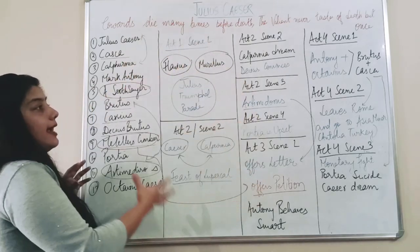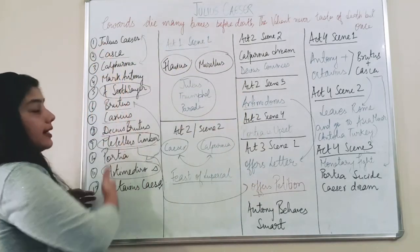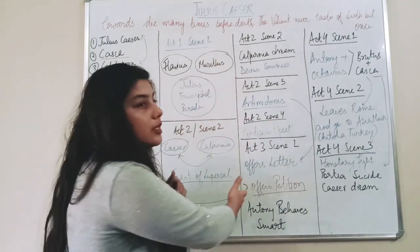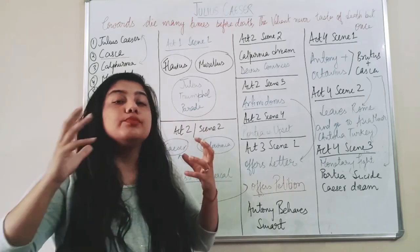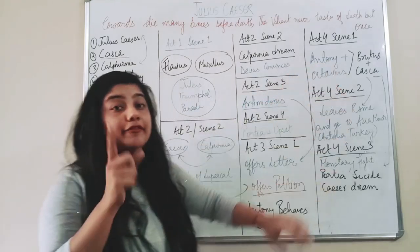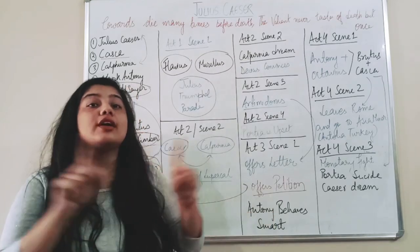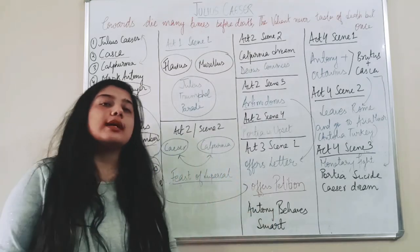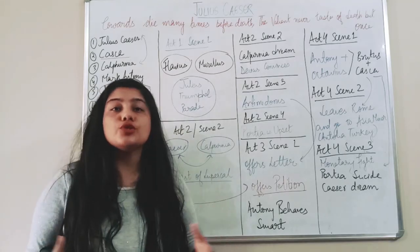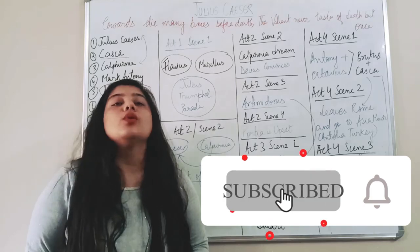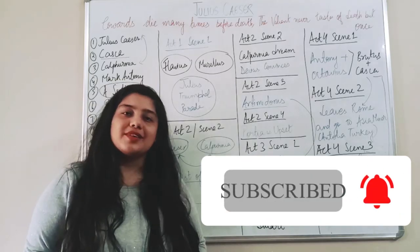So now this was Julius Caesar that I explained in short. I told you about the characters, I told you about the scene, how the warnings were given, how the conspiracy was planned and what a beautiful revenge his best friend Antony took. If he had not played smart he would not have been able to give justice to Caesar. I hope this chapter is clear to you. If you have any doubts you can ask me in the comment section. Also please go like and subscribe my YouTube channel, thank you.